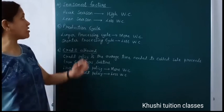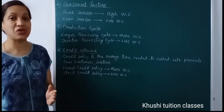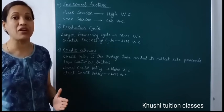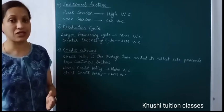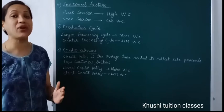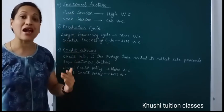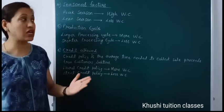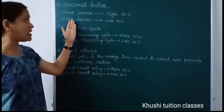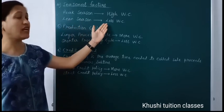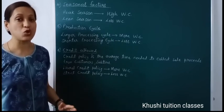The fourth factor is seasonal factor. According to the change in season and festivals, special occasions like marriage period, there is a change in demand of goods and services. So these firms will need different working capital. If it is a peak season for the product or service you are providing, you will need high working capital. If it is an off-season or lean season period, then you need less working capital.